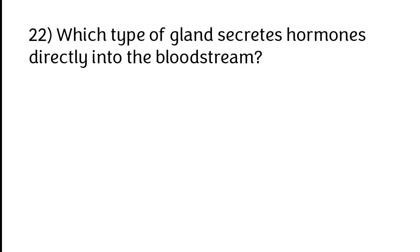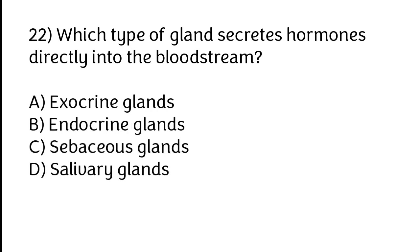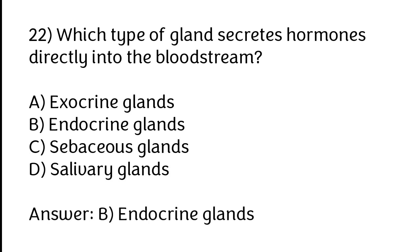Which type of gland secretes hormones directly into the bloodstream? Options: A) Exocrine glands, B) Endocrine glands, C) Sebaceous glands, D) Salivary glands. The correct answer is option B, endocrine glands.